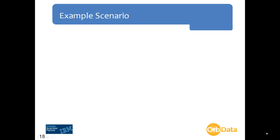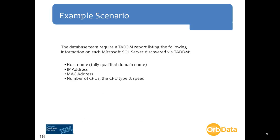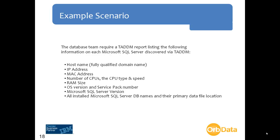Let's look at our example scenario. The database team require a TADAM report listing the following information on each Microsoft SQL Server discovered via TADAM: the fully qualified hostname, the IP address, the MAC address, the number of CPUs, the CPU type and speed, the RAM size of the SQL Server, the OS version and service pack number, the SQL Server version installed on the server, and all installed database names along with their primary data file location. As discussed in Part 1, these attributes are held across 8 different building block views.